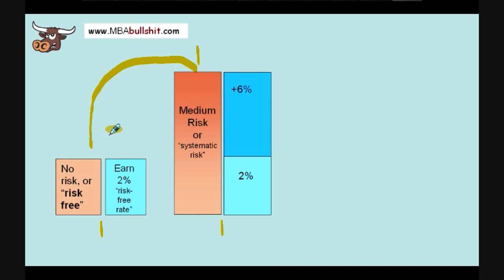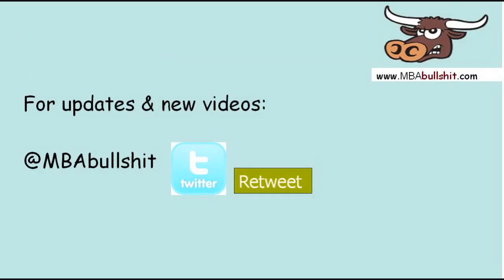Let's just call it equal attractiveness because here you only earn 2% but you've got no risk. Here you earn 2% plus 6% but you have medium risk and medium risk is more than no risk. So, now, these two choices should have equal attractiveness. Exactly.